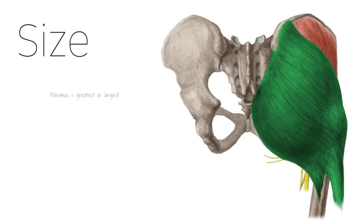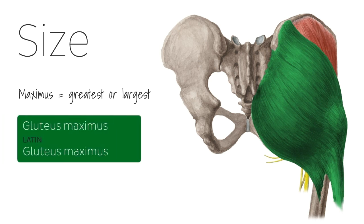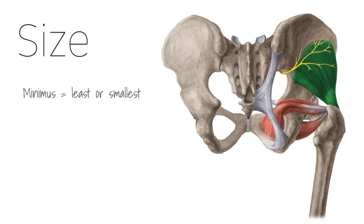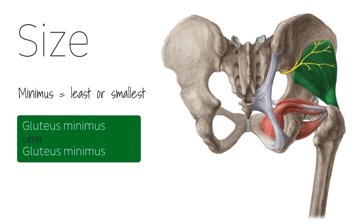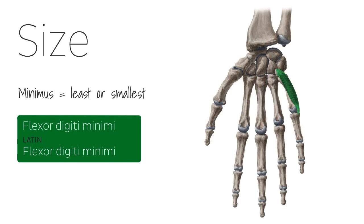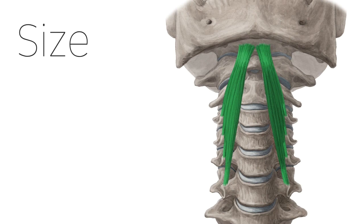The term maximus comes from the Latin meaning largest or greatest. The gluteus maximus muscle is a prime example. The term minimus is the Latin for least or smallest and is also used in naming muscles such as the gluteus minimus muscle, which is the smallest of the three gluteal muscles, or the flexor digiti minimi muscle which flexes the little finger. The length of the muscle can also be taken into account when naming it, using the terms longus for a long muscle and brevis for a short muscle.